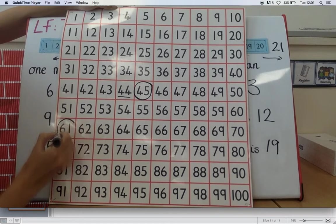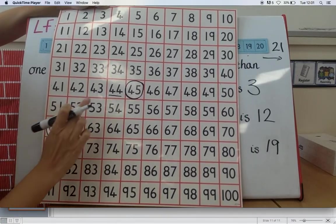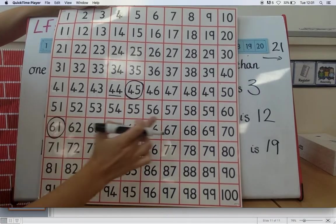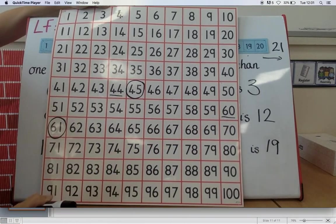Now if you were asked what is one less than, let's say sixty-one, I can't keep going this way, there's nothing there. So I go to the row above. What comes before sixty-one? Sixty-one less than sixty-one is sixty.